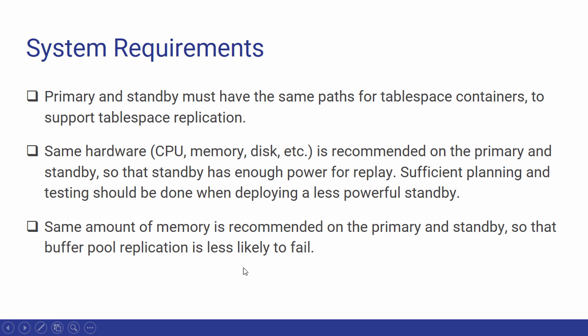The primary and standby must have the same paths for tablespace containers to support tablespace replication. When you install DB2, a folder is created on the C drive — the instance folder — containing the node 0000 directory, database directories, and tablespaces. All of that directory hierarchy should be the same on the primary and the standby.